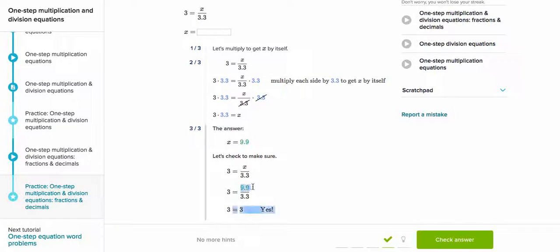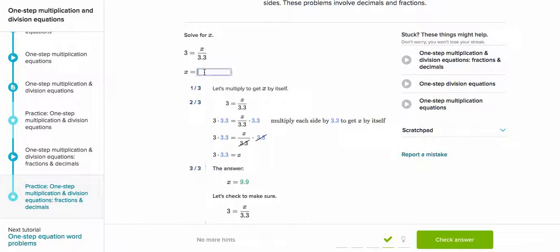Now let's check. Let's divide 9.9 by 3.3, and we get 3. So it's correct. Yes, and we're right. Let's put in our answer.